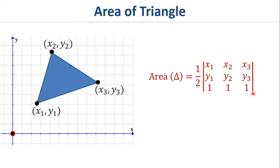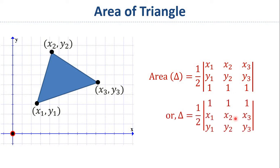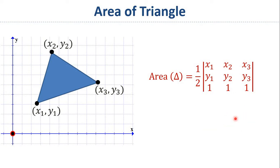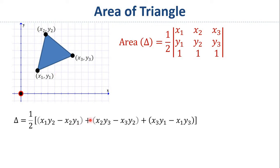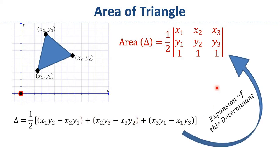You can also perform row operations and write this formula like this. In this video what we are going to do is understand exactly how this formula works — how this determinant is related to the area of this triangle. One way is to do some constructions in the graph and obtain this formula; the formula is nothing but the expansion of this determinant. In this way you can relate the determinant to the area of this triangle.